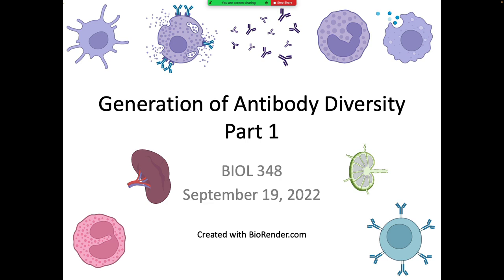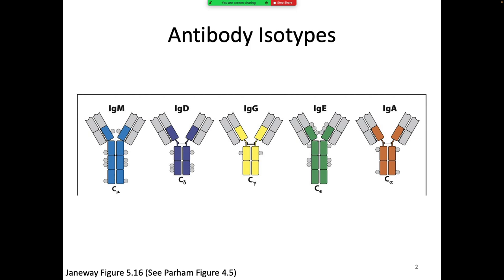Today we are going to finish talking about antibody structure and function and then move into the issue of generation of antibody diversity. We left off last time talking about the different antibody isotypes. We have specifically talked about IgM, IgD, IgE, and IgA, and we're in the midst of talking about IgG.